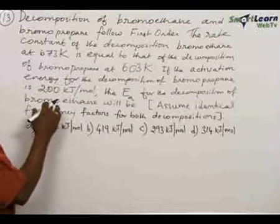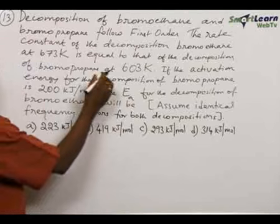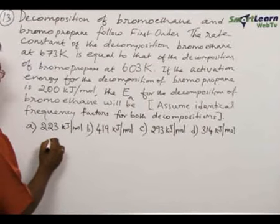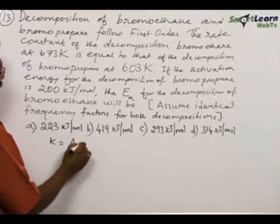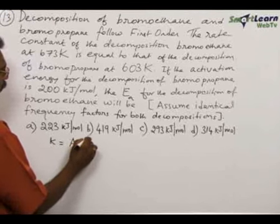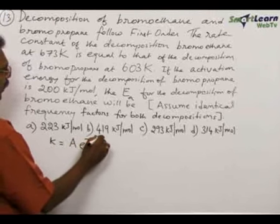This problem is solved on the basis of Arrhenius equation for rate constant, that is k equals A, the frequency factor, times e to the power of minus Ea by RT.